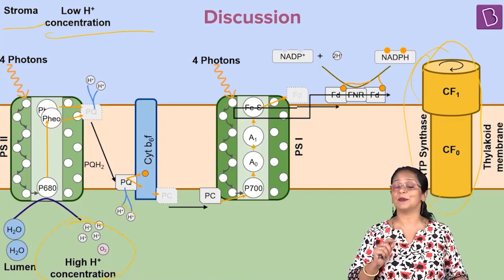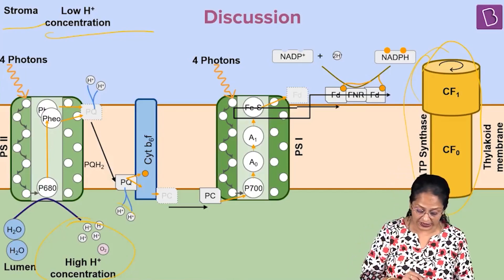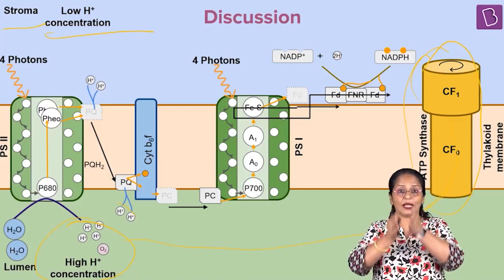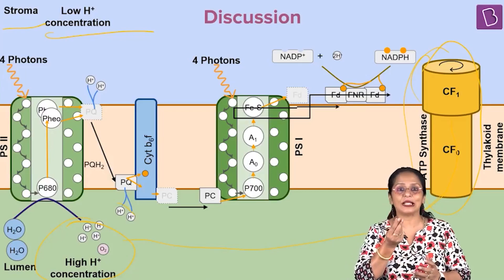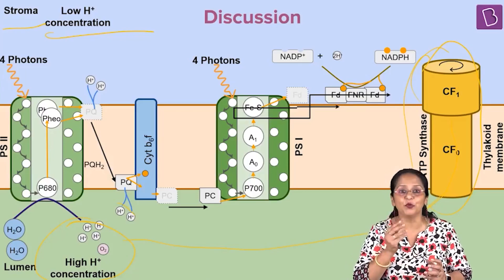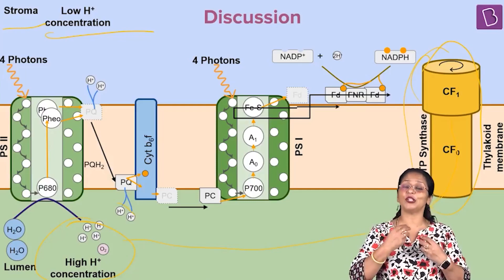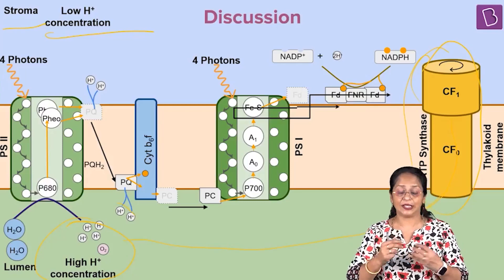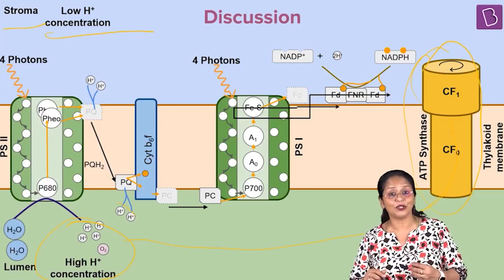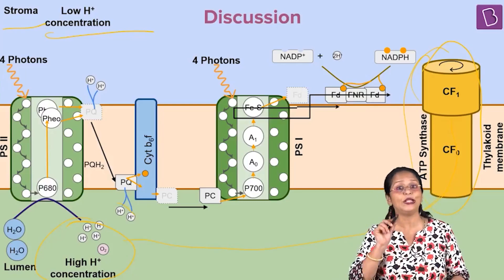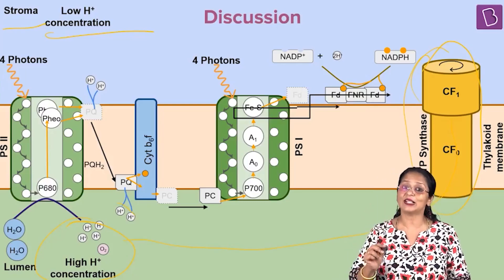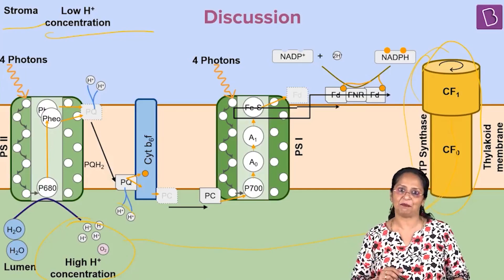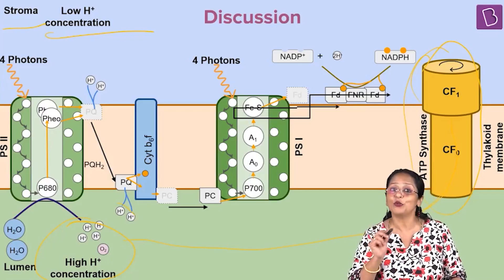Chemiosmosis was studied by a scientist by the name Mitchell. As these protons move through the CFO channel, it starts rotating and the protons also start moving. Because of this, the protons are pushed — there is a force, an energy that is created. It is moving from a region of higher concentration towards a region of lower concentration through the ATP synthase, and this causes the inorganic phosphate group to be picked up by ADP to form ATP.